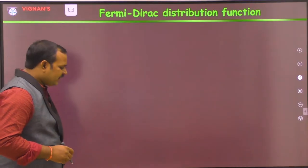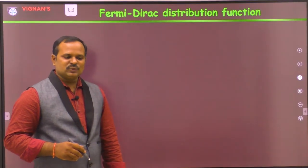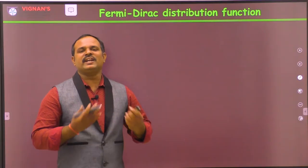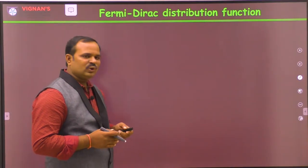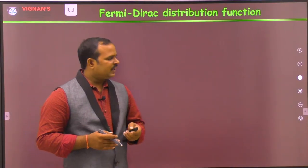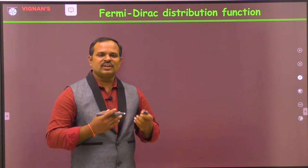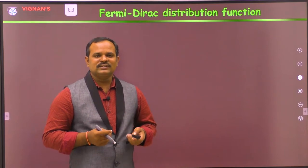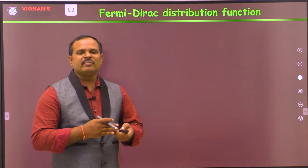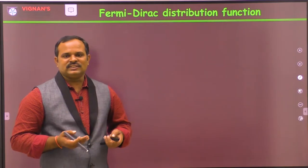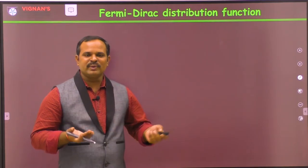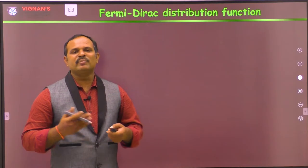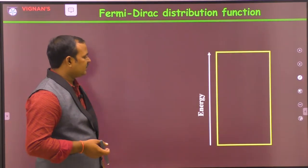The Fermi-Dirac distribution function — what is the meaning of this? What actually does it tell us? As we know, in the quantum free electron theory or in quantum mechanics, electrons follow Fermi-Dirac statistics, and electrons are also called Fermions. So they follow Fermi-Dirac statistics.